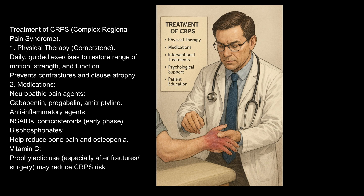2. Medications: neuropathic pain agents including gabapentin, pregabalin, amitriptyline; anti-inflammatory agents such as NSAIDs and corticosteroids in the early phase; bisphosphonates to help reduce bone pain and osteopenia; and Vitamin C for prophylactic use, especially after fractures or surgery, which may reduce CRPS risk.